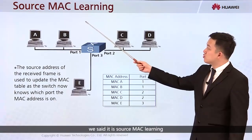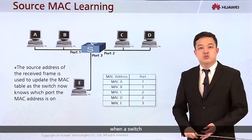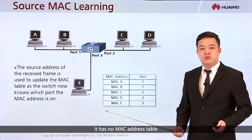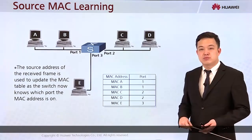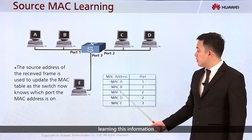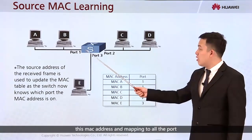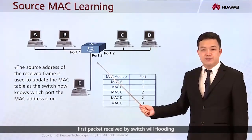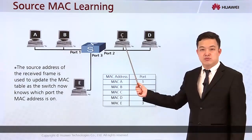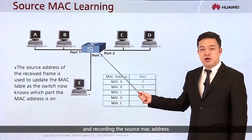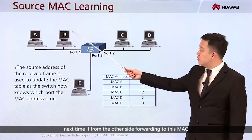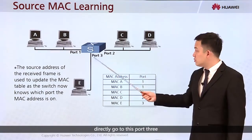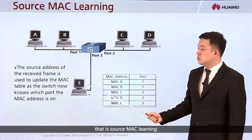We call this source MAC learning. When a switch is first powered on, it has no MAC address table. The first packet received by the switch will be flooded to all other interfaces, and the switch records the source MAC address. Next time, if a packet is destined for that MAC, it will not flood to all interfaces — it goes directly to that port.